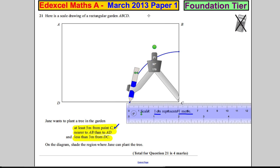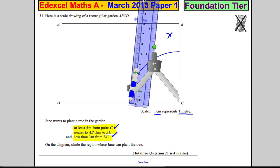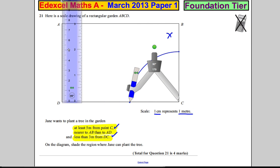And there, everything inside that arc of a circle is five meters or less, but you want it at least five meters from point C, so you want the outside, so you want out here. Now, less than three meters from point DC. DC is a straight line, so all we've got to do is measure three centimeters here—that would be the same as three meters. So that's three there.